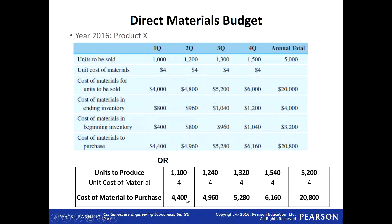Later on we will also see that for material there is sometimes a desired ending inventory as well — we want to have some extra material. You can also have a beginning inventory for material. We will go into more detail in later examples, but here we just stop to see what is the cost of the material.